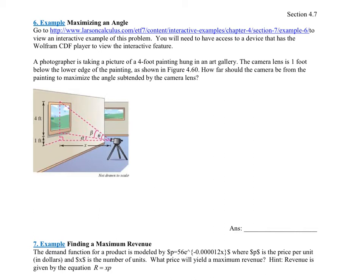Example 6. Just one more bad example, I promise. At least this one is one more bad example. So it says, a photographer is taking a picture of a 4-foot painting hung in an art gallery. So this is 4-foot.